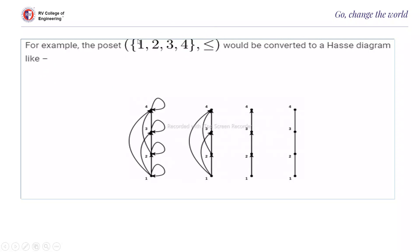First, we write the elements. The relation is reflexive, so (1,1), (2,2), (3,3) are there — giving self-loops. Next, 1 ≤ 2, so there is an edge (1,2). 1 ≤ 3, so there is an edge. 1 ≤ 4, so there is an edge. Then 2 ≤ 3 gives an edge, 2 ≤ 4 gives an edge, and 3 ≤ 4 gives an edge. This is the full digraph representation.